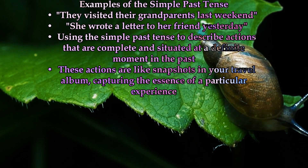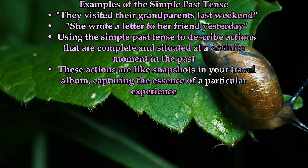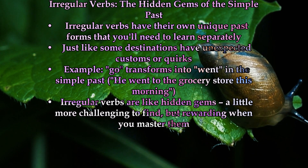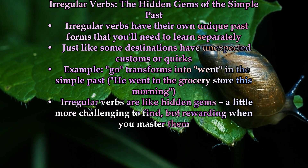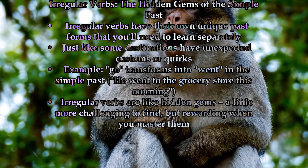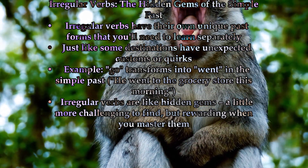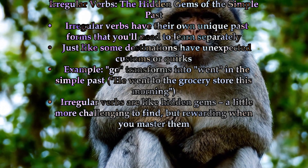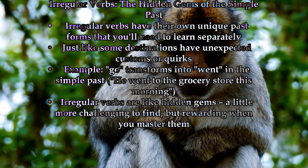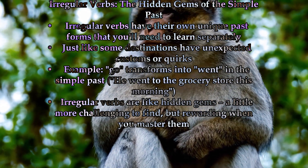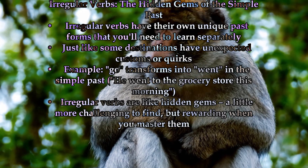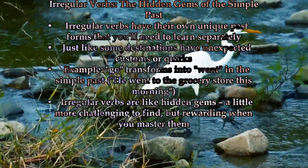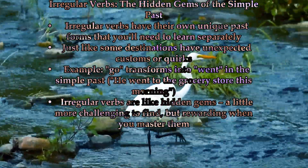These actions are like snapshots in your travel album, capturing the essence of a particular experience. But the simple past is not without its irregularities. Just as some destinations have unexpected customs or quirks, irregular verbs have their own unique past forms that you'll need to learn separately. Take the verb 'go,' for instance. In the simple past, it transforms into 'went,' as in 'he went to the grocery store this morning.' These irregular verbs are like the hidden gems of the past tense world — a little more challenging to find, but all the more rewarding when you master them.